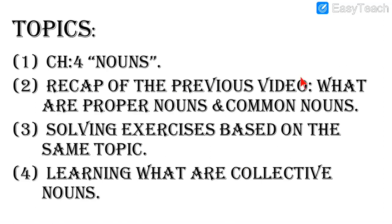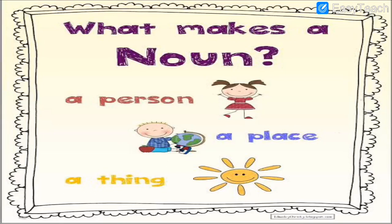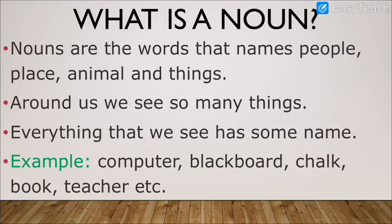Let us have the recap of the previous video first. What makes a noun? A person, a place, a thing. A noun can be the name of a person, a name of a place, a name of a thing. The definition of the noun we had seen: nouns are the words that name people, places, animals, and things. Anyone's name — your name, my name — any place's name, any animal's name, any particular name of a thing — these are all called nouns.